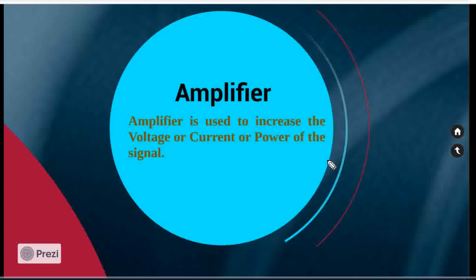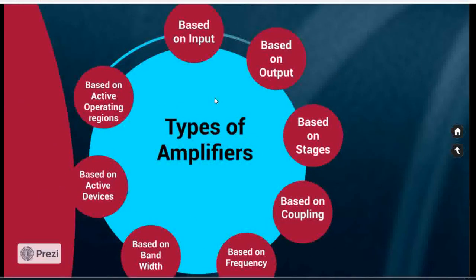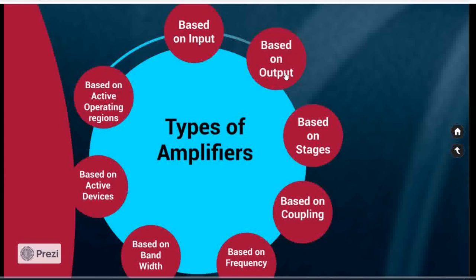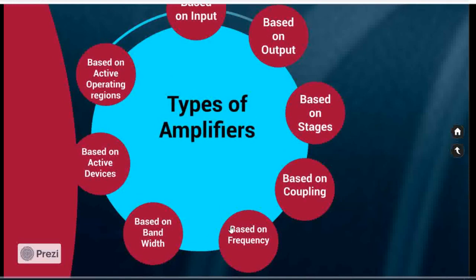Now we move our concept towards the types of the amplifier. Amplifiers are classified based on the corresponding input signal, based on the output signal, based on the stages, based on the coupling elements we are using, based on the frequency that the amplifier is working, based on the bandwidth, based on the active devices we are going to be using, and based on the operating point the amplifier is working.